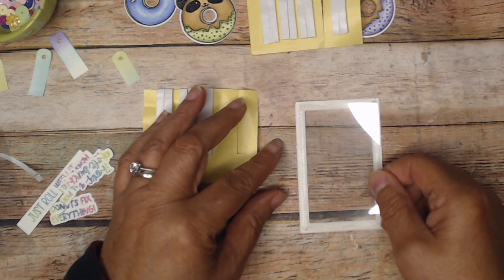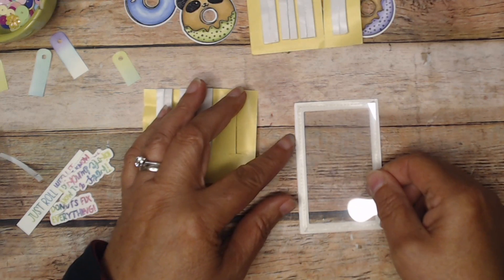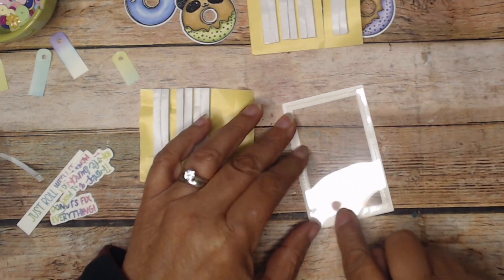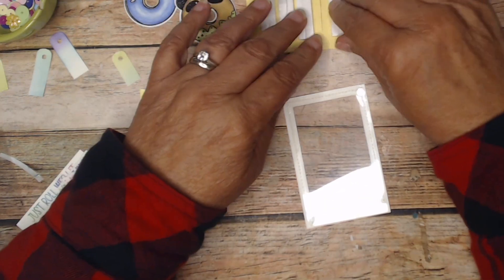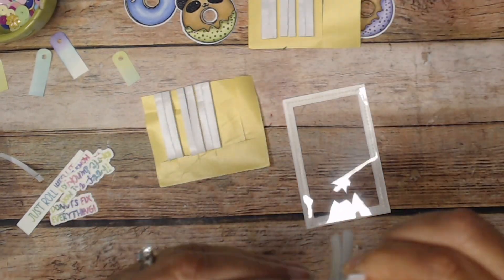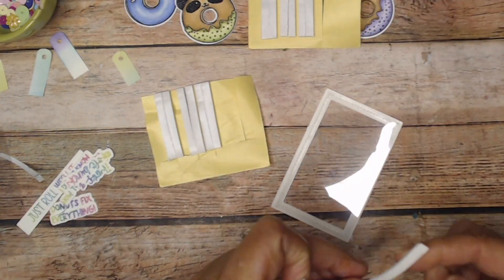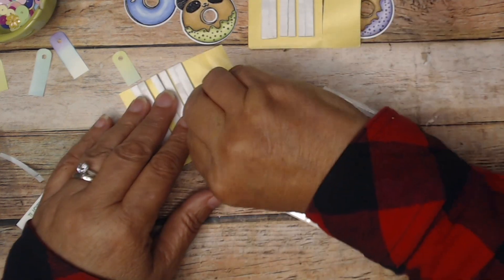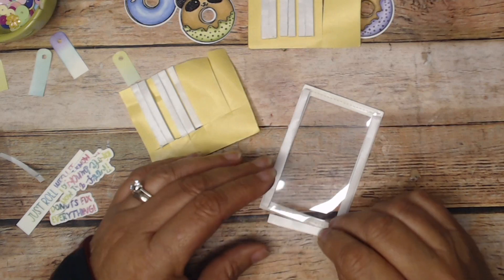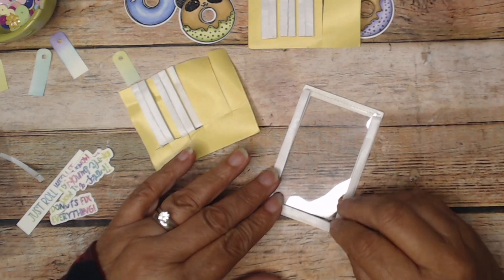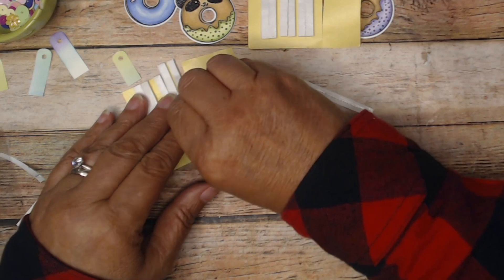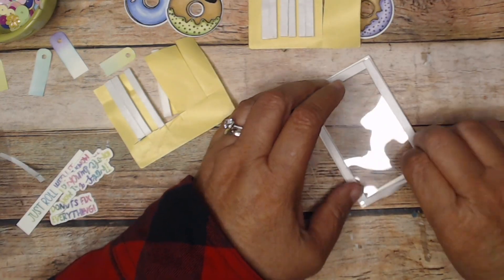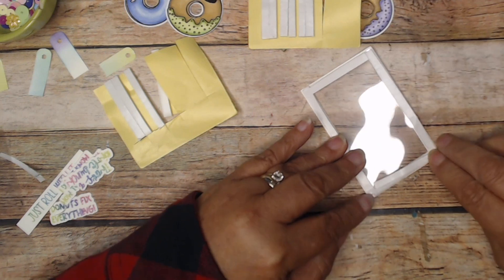Then I'm going to take my foam adhesive, put a long strip on the long side, and the short strips on the short side. That's perfect, it'll butt right up against the other one, which is exactly what you want.